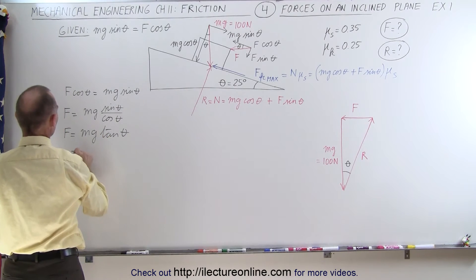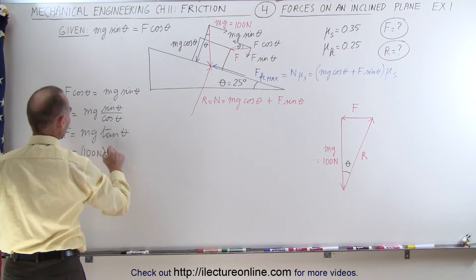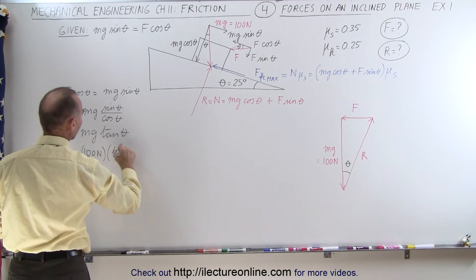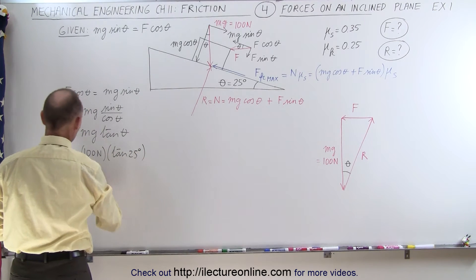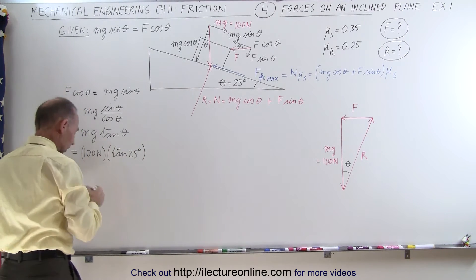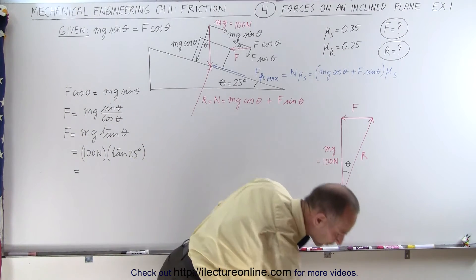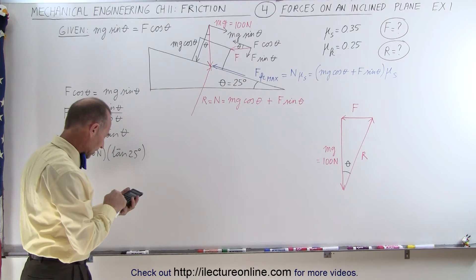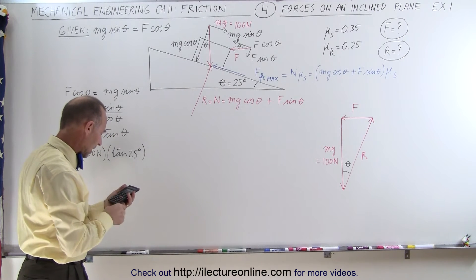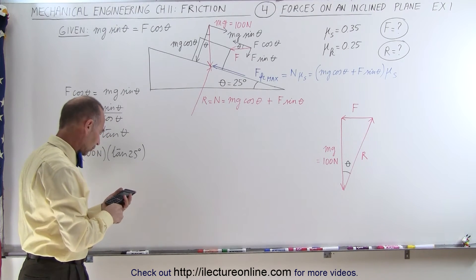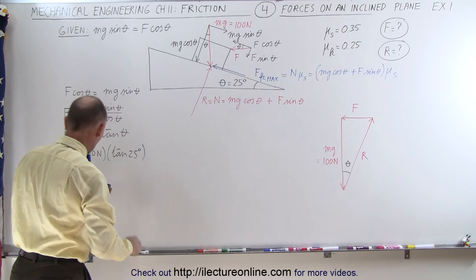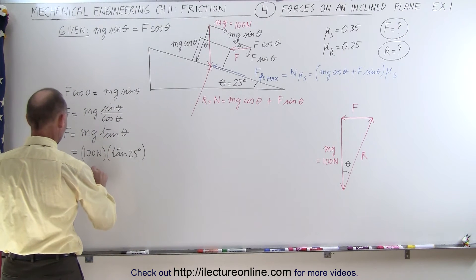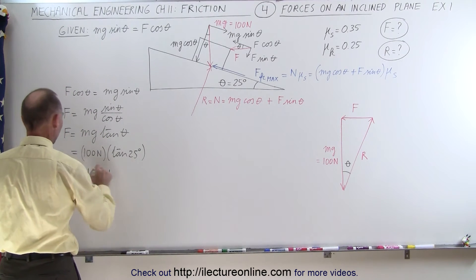Now we plug in the values. F is equal to 100 Newtons times the tangent of 25 degrees. With a calculator, taking the tangent of 25 and multiplying by 100, we get a total force of 46.6 Newtons applied to the block.